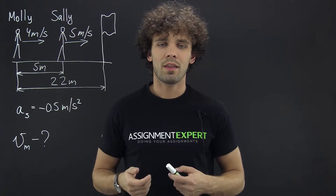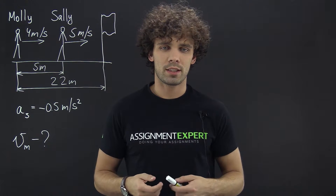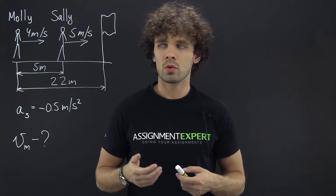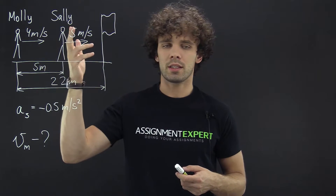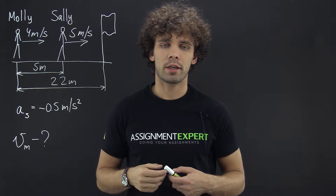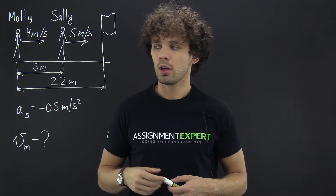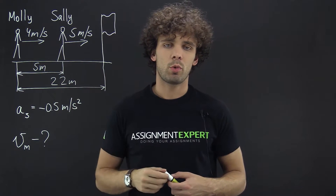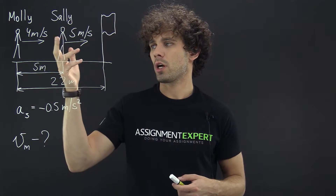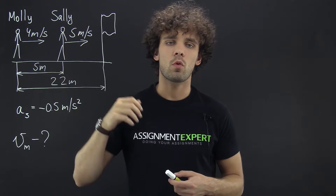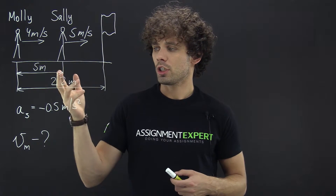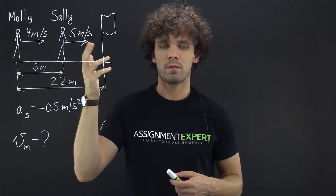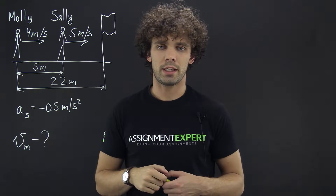Hi guys, this is Simon Expert, and in today's example we have two girls, Molly and Sally, participating in a running competition. Molly is 22 meters away from the finish line and runs at a speed of 4 meters per second. She is 5 meters away from Sally, who runs with a speed of 5 meters per second.